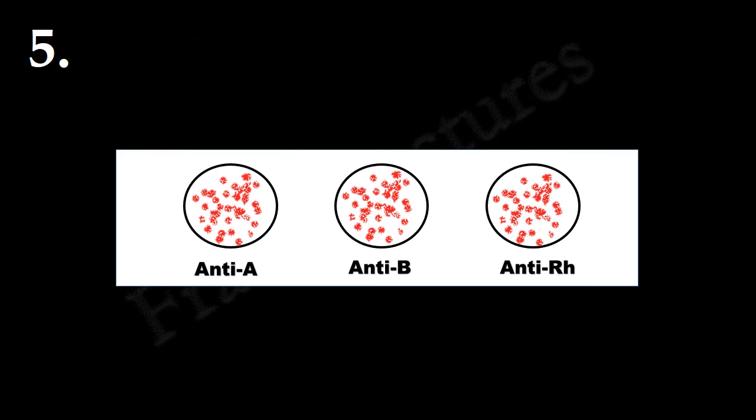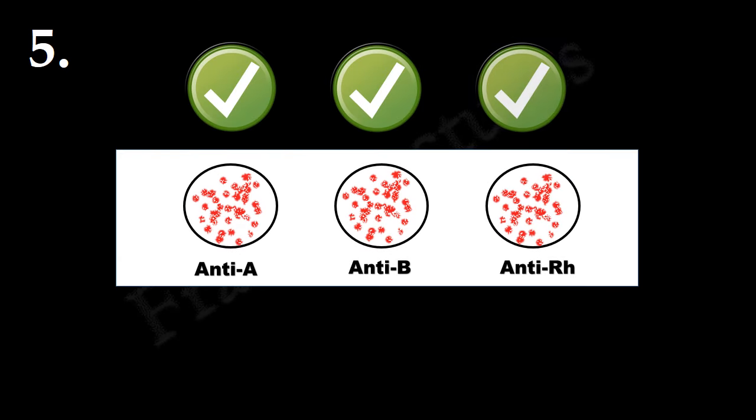Here, agglutination is observed in all three circles. This means all three antigens are present. Therefore, blood group is AB positive.